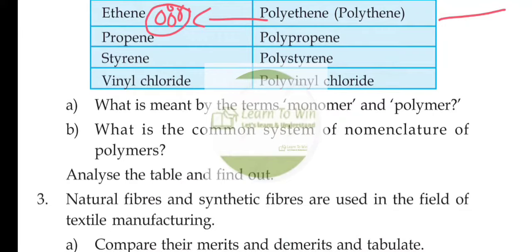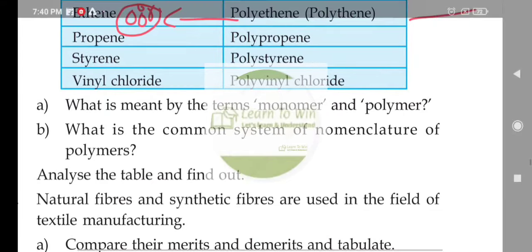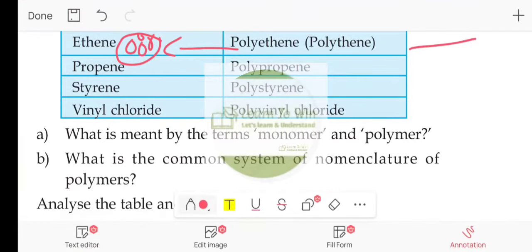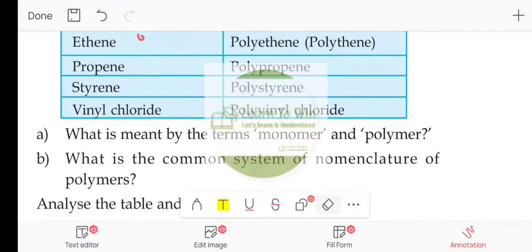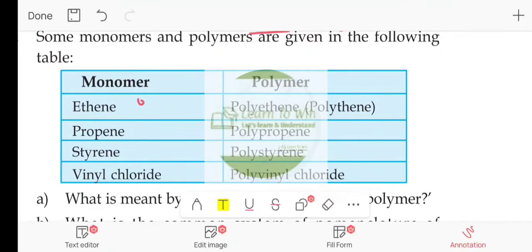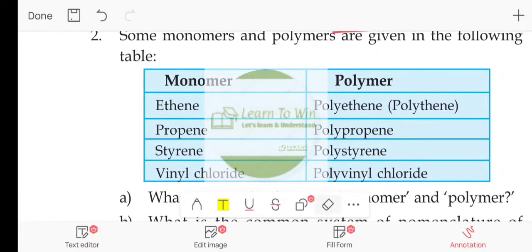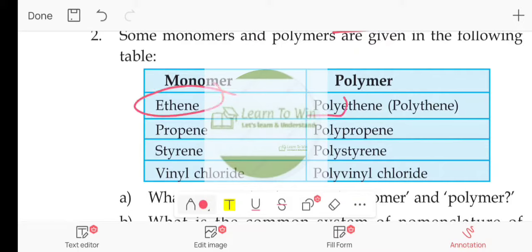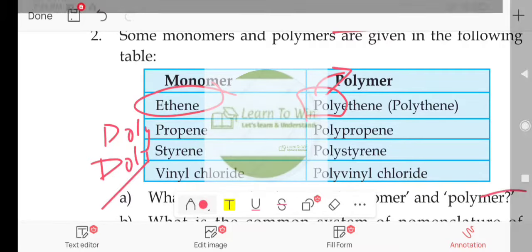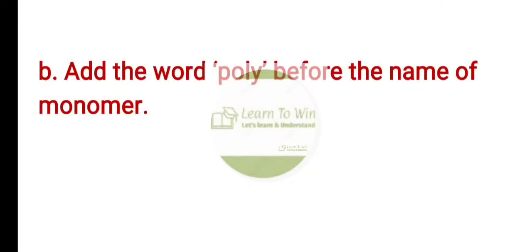What is the common system of nomenclature of polymers? Analyze the table and find out the common system. The common system is to add the prefix 'poly' before the name of the monomer. For example, ethylene becomes polyethylene, propene becomes polypropene.